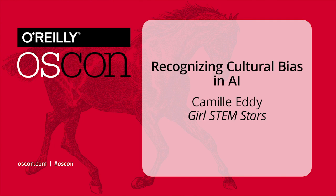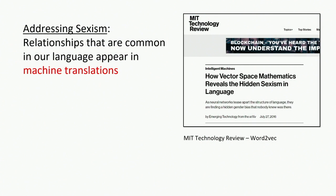The first example I want to talk about is sexism. We've heard of Word2Vec, which is an algorithm and training set made by Google. They trained it on about 3 million words from Google News. They found that there were vector relationships between words that reflect the relationships we have, and they were able to produce simple algebraic expressions to understand these word relationships.